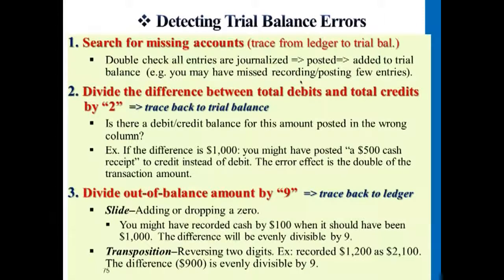Assuming everything else is correct, at the end you will have a balance of $100 on the left-hand side and $1,000 on the right-hand side. The difference is $900, and this $900 will be evenly divisible by nine.